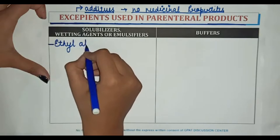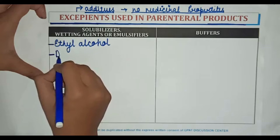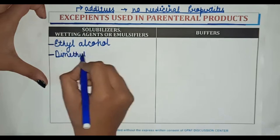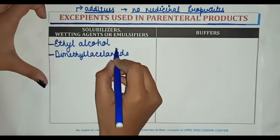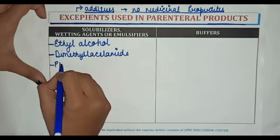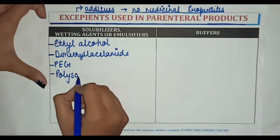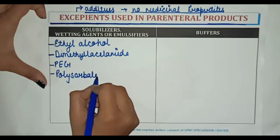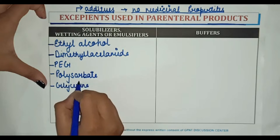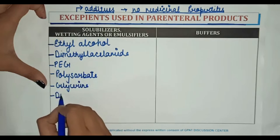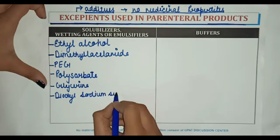Now let us discuss about solubilizers, wetting agents, or emulsifiers used as excipients in parenteral products. First is ethyl alcohol. Second is dimethyl acetamide. Third is PEG. Fourth is polysorbate. Fifth is glycerine. Sixth is di-octyl sodium sulfosuccinate.